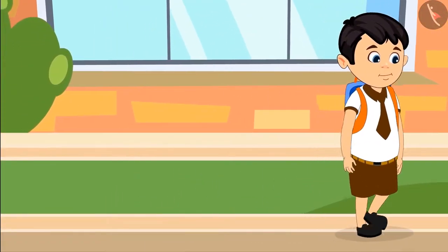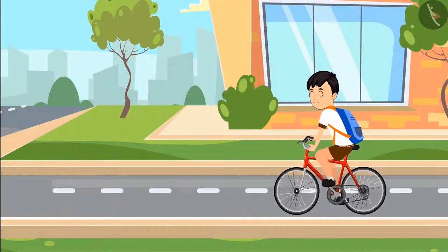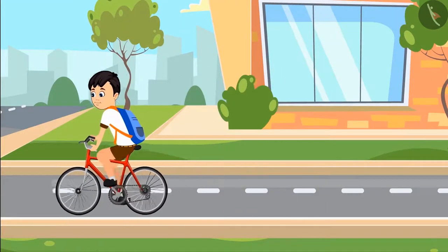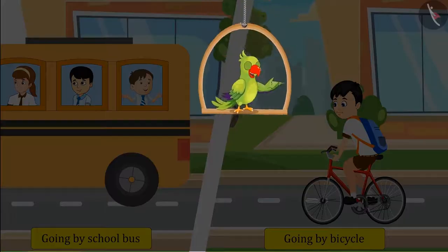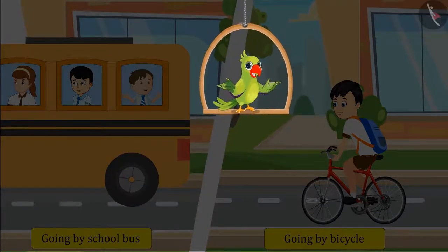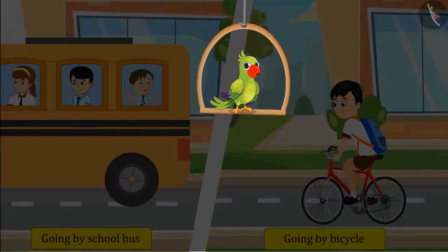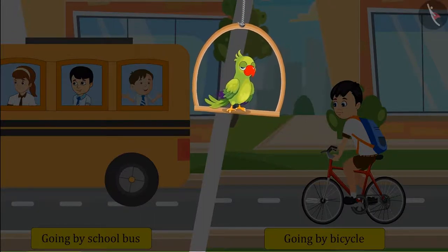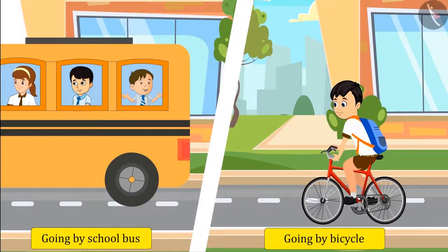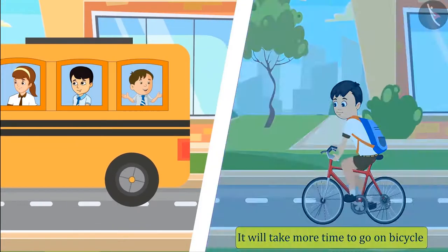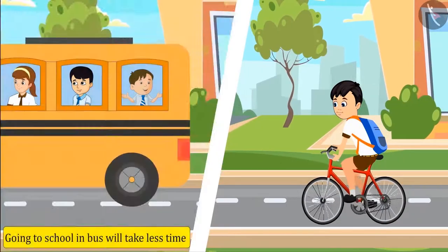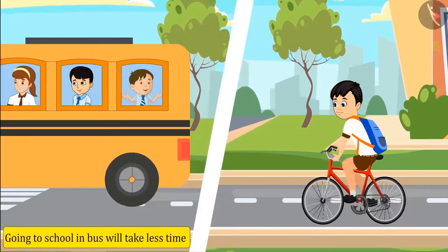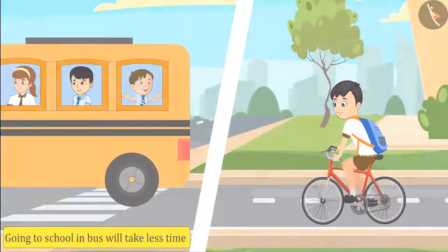Because he missed his school bus, he took out his bicycle and rode to school on a bicycle. Children, what do you think? Which way will Jhotu take more time to reach the school — by his bicycle or by his school bus? You have guessed it right. It will take more time to go by bicycle because the bus runs faster than the bicycle.